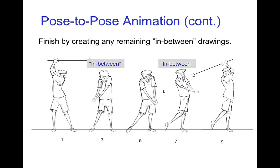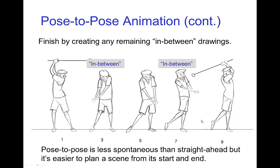You could continue and have in-between drawings that are between the first and the middle breakdown drawing, and then another one between the breakdown drawing and the last pose. You can continue and fill in as much as needed. This is somewhat less spontaneous and expressive than straight ahead, but certainly easier to plan a scene from start to finish. It's also the more common type of animation used in computer animation, where the computer can create the in-betweens with the animator establishing just a few of the keys and breakdowns.